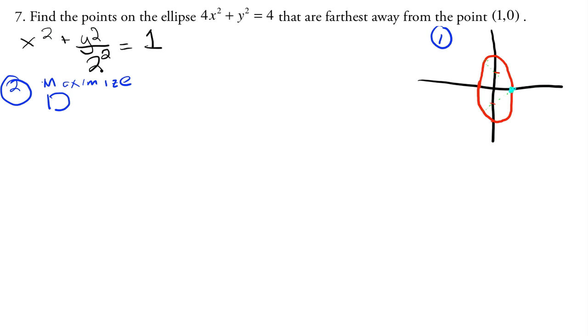And so the distance is equal to the square root of x minus, so it's x₂ minus x₁, so it's going to be my x value minus my point which is one, squared, plus y minus zero squared.